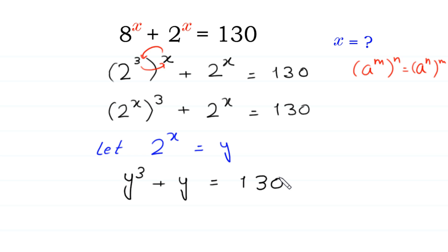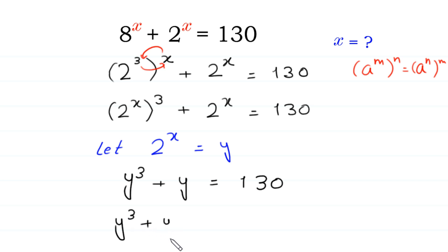Next, we move 130 to the left side: y cubed plus y minus 130 is equal to 0.